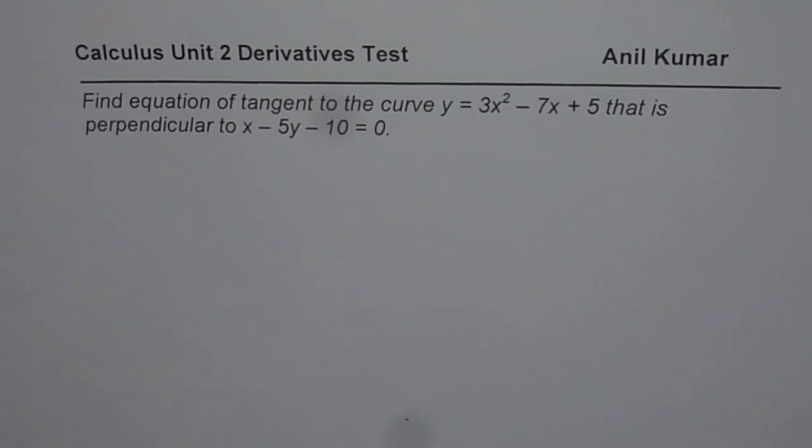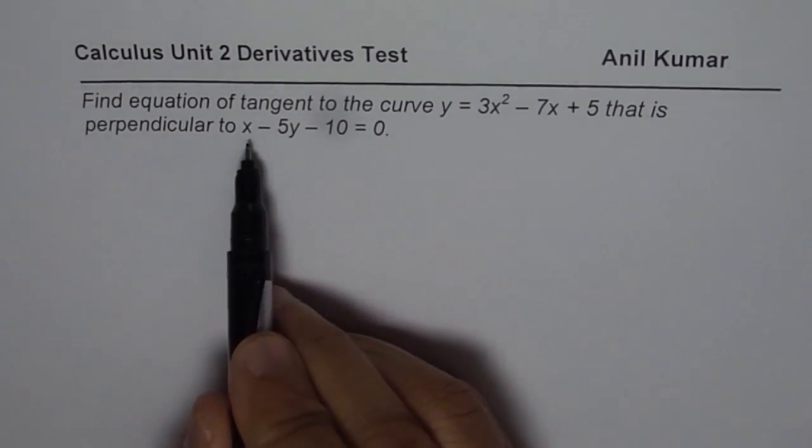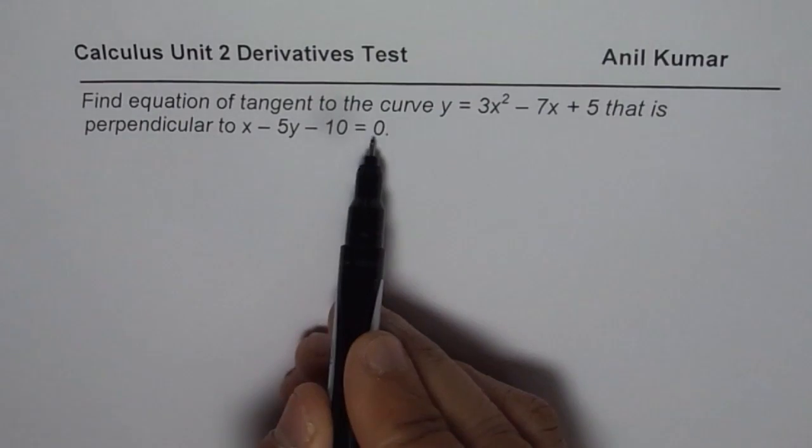I am Anil Kumar and here is a solution of another question from the test paper. The question is find equation of tangent to the curve y equals 3x squared minus 7x plus 5 that is perpendicular to the line x minus 5y minus 10 equals 0.